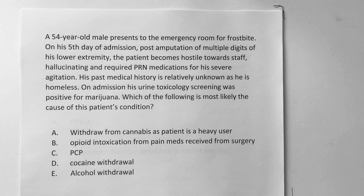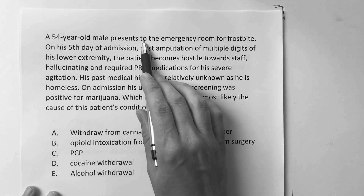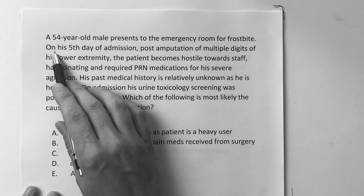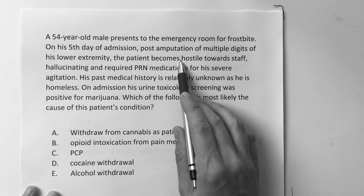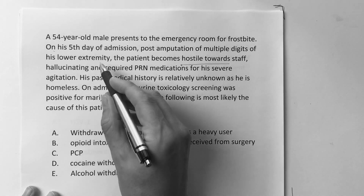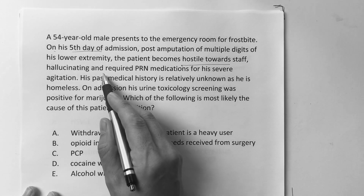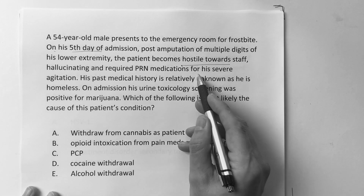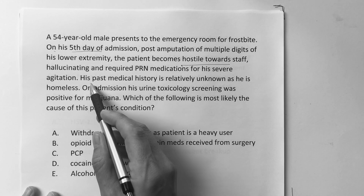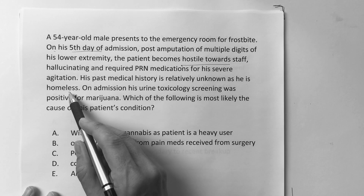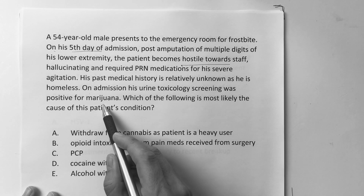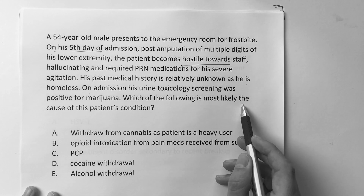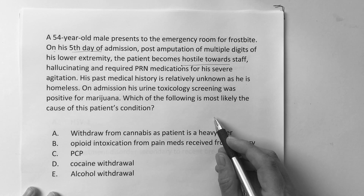This is a drugs of abuse question. A 54-year-old male presents to the emergency room for frostbite. On his fifth day of admission, post-amputation of multiple digits of his lower extremity, the patient becomes hostile towards staff, hallucinating, and required PRN medications for severe agitation. His past medical history is relatively unknown as he is homeless. On admission, his urine toxicology screening was positive for marijuana.